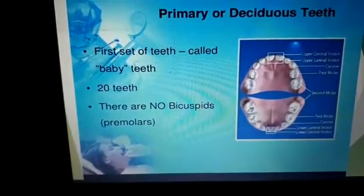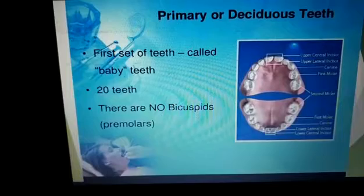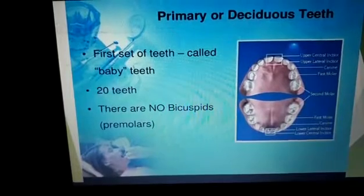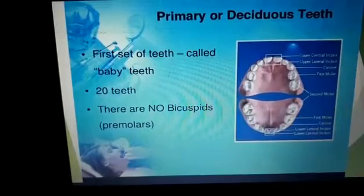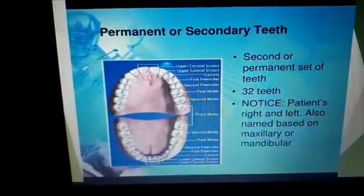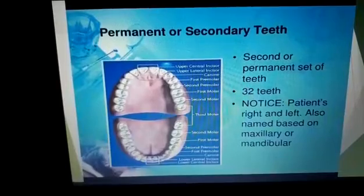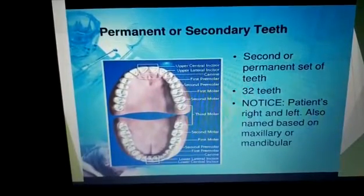The primary or deciduous teeth are the first set of teeth, called baby teeth. They are 20 in number and there are no bicuspids or premolars present in this dentition. The permanent or secondary teeth are 32 in number and represent the second or permanent set of teeth.